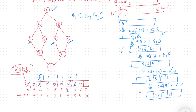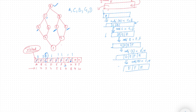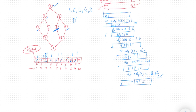I pop out E and check its adjacent. The adjacent of E are B and I. B is already visited. I is not visited — mark it as one and add to the queue. Then I pop out F. The adjacent of F are B and I, and both are already visited, so nothing happens.